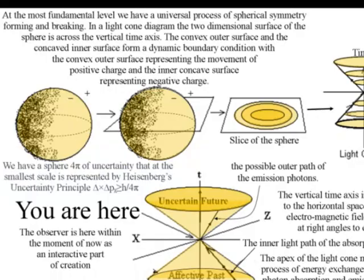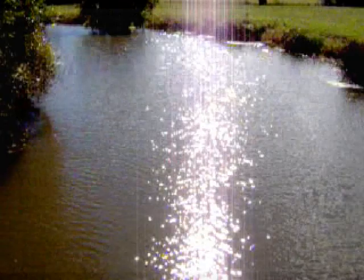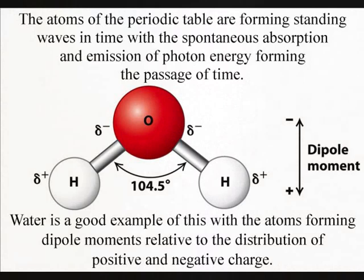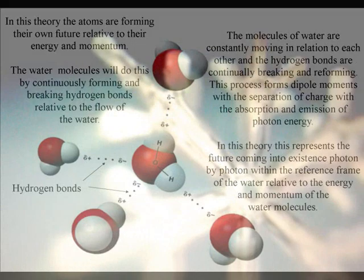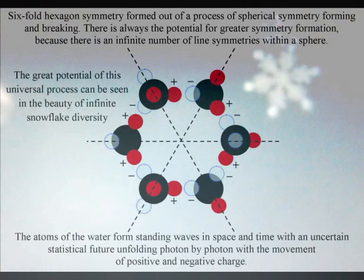A simple example of this is flowing water with hydrogen bonds breaking and forming with the exchange of photon energy and the movement of positive and negative charge relative to the environment that the water is flowing in. This represents the future unfolding photon by photon within the water. Just a change in environmental temperature can cause the atoms to bond together with the process forming the degrees of freedom needed for infinite snowflake diversity.